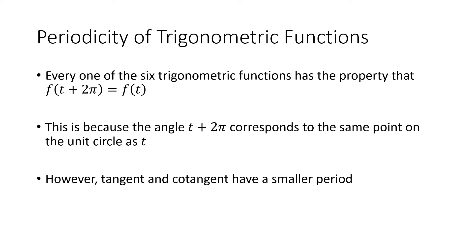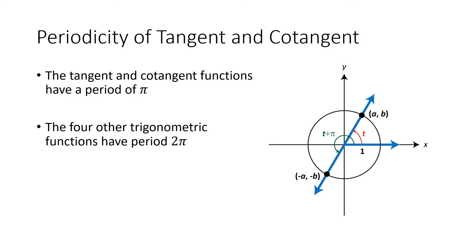However, tangent and cotangent actually have a smaller period. If I only rotate π radians (180 degrees), I get to a different point, but remember the tangent is b/a, which equals (-b)/(-a), and cotangent is a/b, which equals (-a)/(-b). So for tangent and cotangent, rotating an additional π radians lands on a different point but one where those functions have the same value. Therefore tangent and cotangent have period π, while the other four trigonometric functions have period 2π.